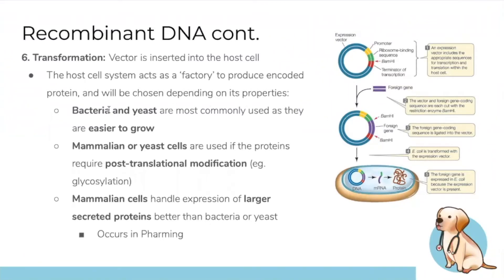This process usually happens in bacteria or yeast cells because they're easier to grow. However, if the protein needs post-translational modification — like what happens in the endoplasmic reticulum — or if you're producing larger proteins, it needs to happen in mammalian or yeast cells instead.